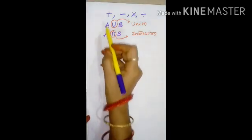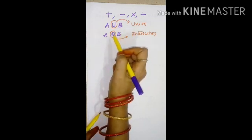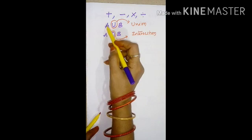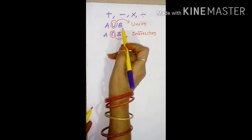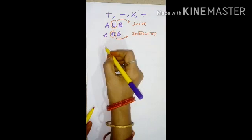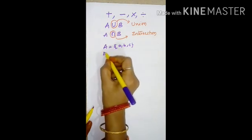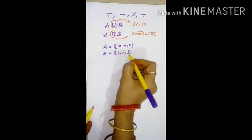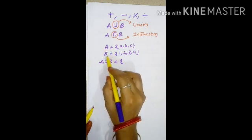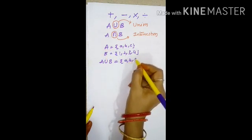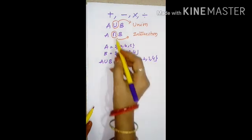The symbol indicates union, cap indicates intersection. What is the meaning of union? The elements in A and in B. For example, if A is {a, b, c} and B is {1, 2, 3, 4}, their union is {a, b, c, 1, 2, 3, 4}. This is the union set.